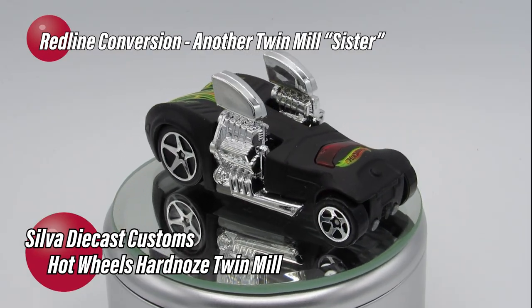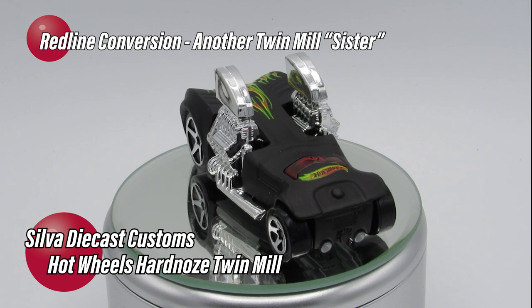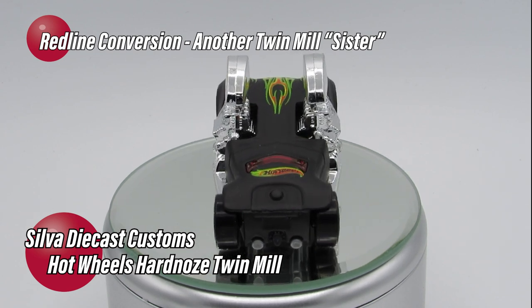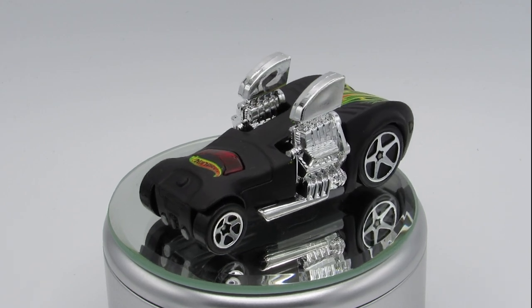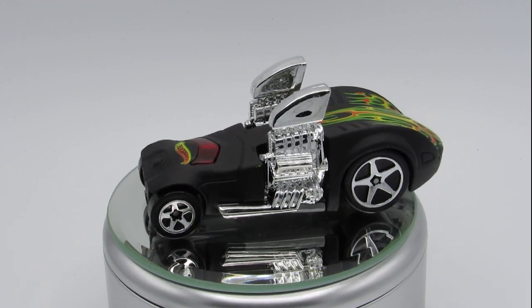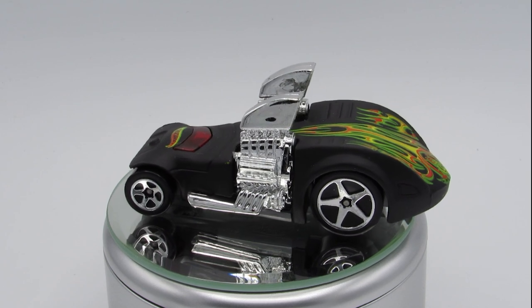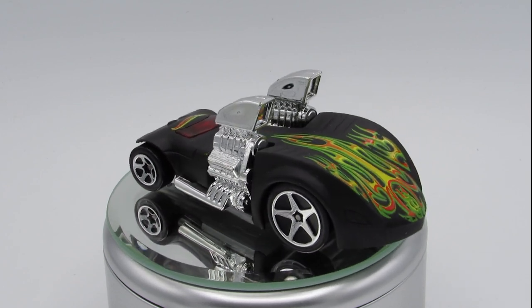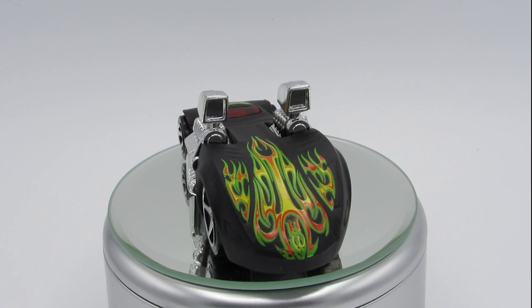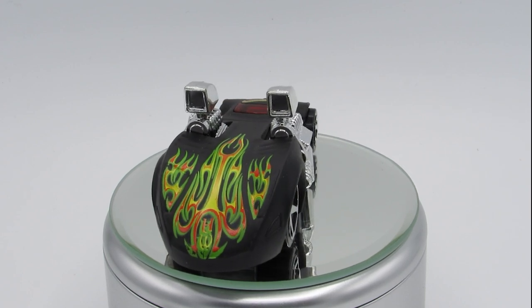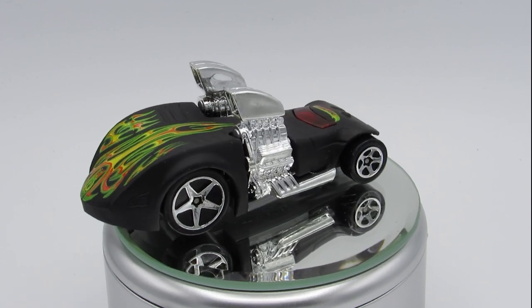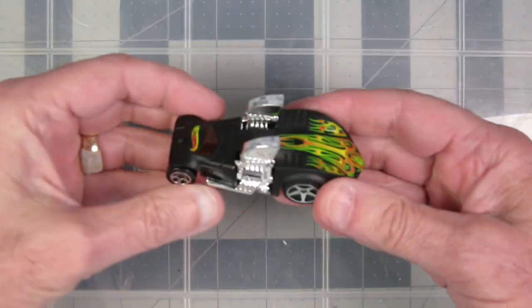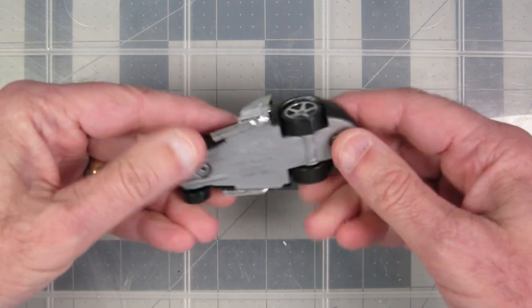This is the Hot Wheels Hard Nose Twin Mill. Take a good look at that casting. This back end that you're seeing here, the low part, is the back of the car. See how the engines are facing forward? This is the front of the car. And this is quite easily the ugliest twin mill of all. All the other versions look really good. This one is just ugly.